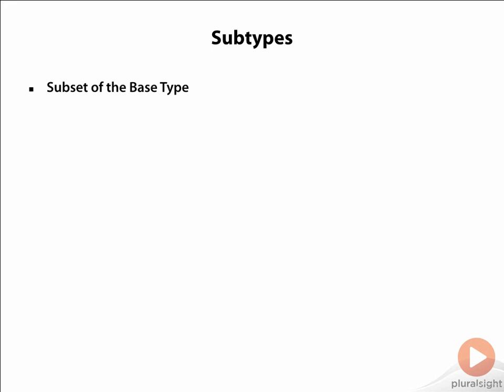Subtypes are subsets of the base types like number, character, or date types. They support the same operations as the base type. They can be constrained. For instance, integer, which is a subtype of number, is a number with a precision of 38 and a scale of 0, and so it doesn't allow any decimals.